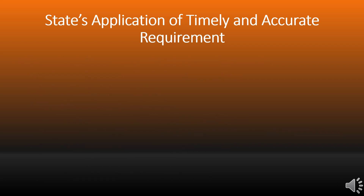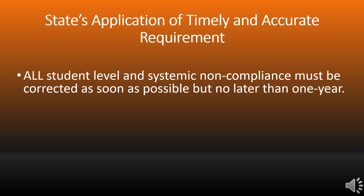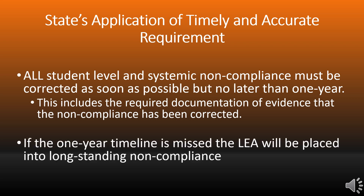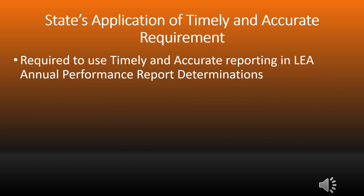All student-level and systemic noncompliance must be corrected as soon as possible, but no later than one year. This includes the required documentation of evidence that the noncompliance has been corrected. If the one-year timeline is missed, the LEA will be placed into long-standing noncompliance. States are required to use timely and accurate reporting in the local education agency's Annual Performance Report determinations.